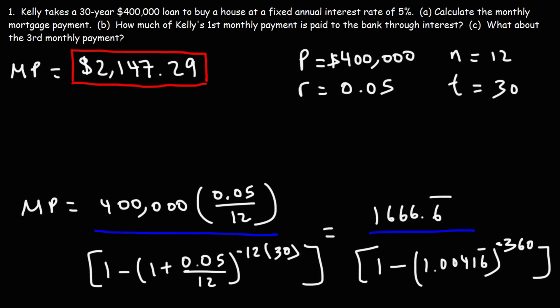Now let's move on to part B. We want to find out how much of Kelly's first monthly payment goes to the bank through interest and how much goes into paying off the principal — reducing the balance of the loan.